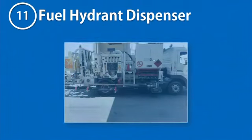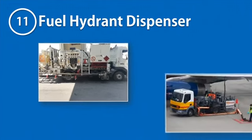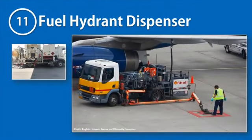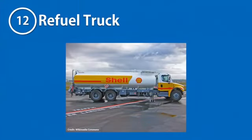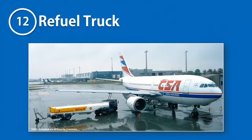The ground support equipment responsible for aircraft refueling is the fuel hydrant dispenser. It is a fuel rig mounted over a truck chassis that filters and samples aviation fuel before letting it through to the aircraft. Alternatively, a refuel truck is another ground support equipment for aircraft refueling — it is a large oil tanker carrying aviation fuel and an associated pumping system for uplifting the fuel into the aircraft.